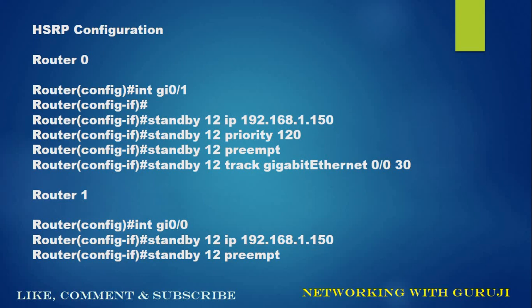We will use the commands: standby 12, followed by the IP address which will become the default gateway of our PC. Then the priority — by setting the priority to more than 100, we are making this router the active router. Then preempt, and then the track command. By using tracking, if the interface goes down, our priority will automatically decrease by the value we have provided, in this case 30. For Router 1, we do the HSRP configuration with the standby command and the IP address.